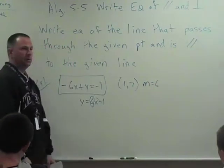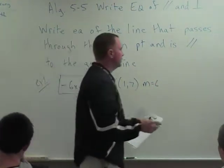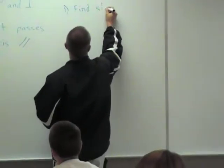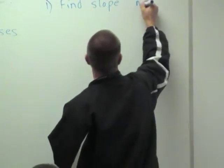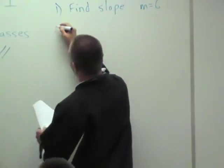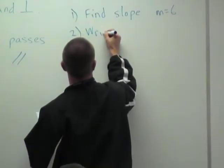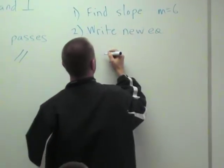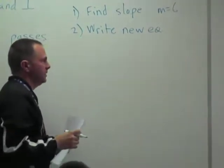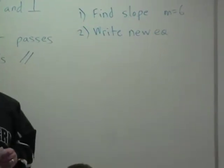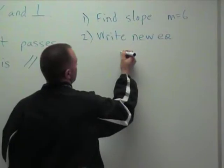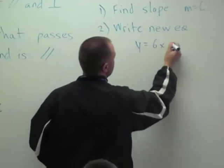Now we go through the process. So the first step is find the slope, which we did, m equals 6. The second step is write the new equation in slope intercept form. And these are the steps that we learned earlier about finding the y-intercept. So y equals 6x plus b.